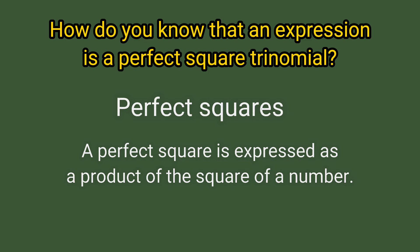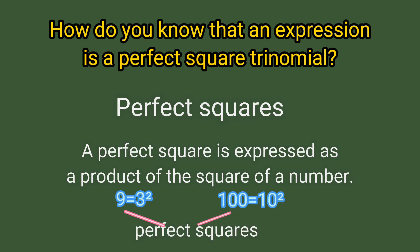For example, 9 is equal to the square of 3, and 100 is equal to the square of 10. So 9 and 100 are called perfect squares.